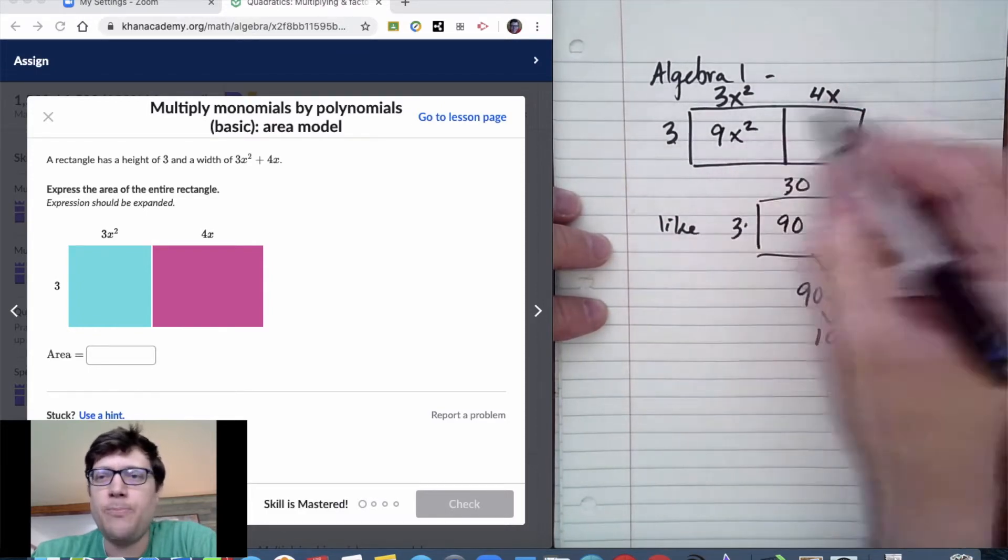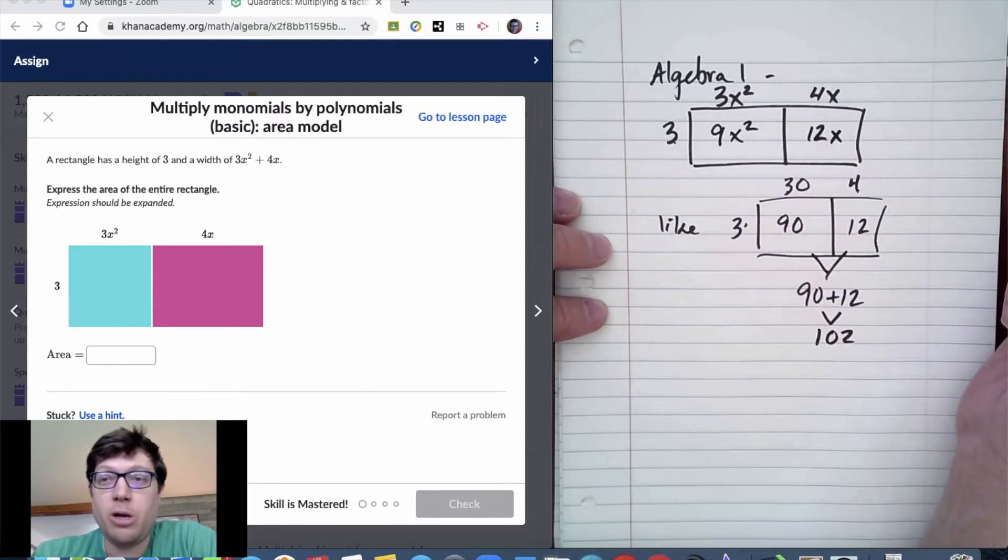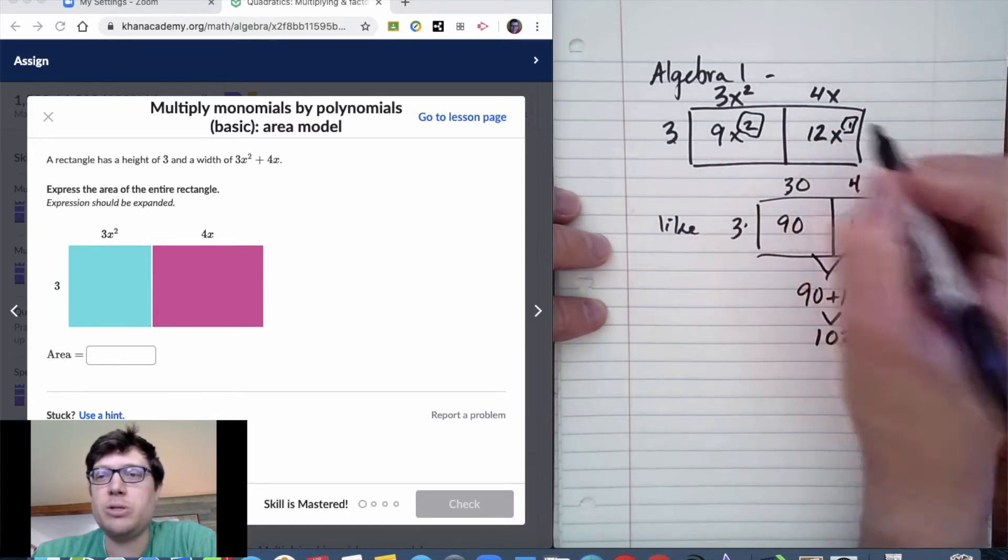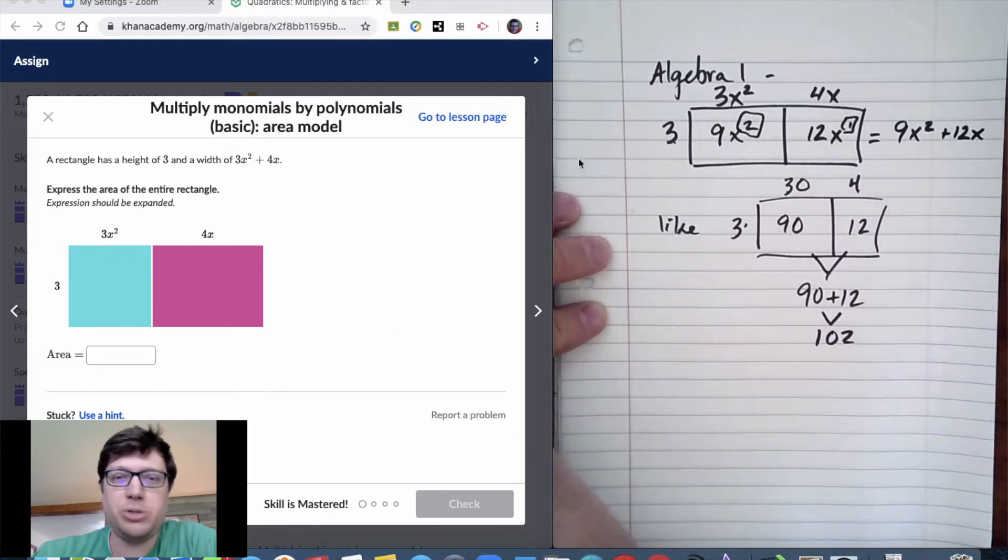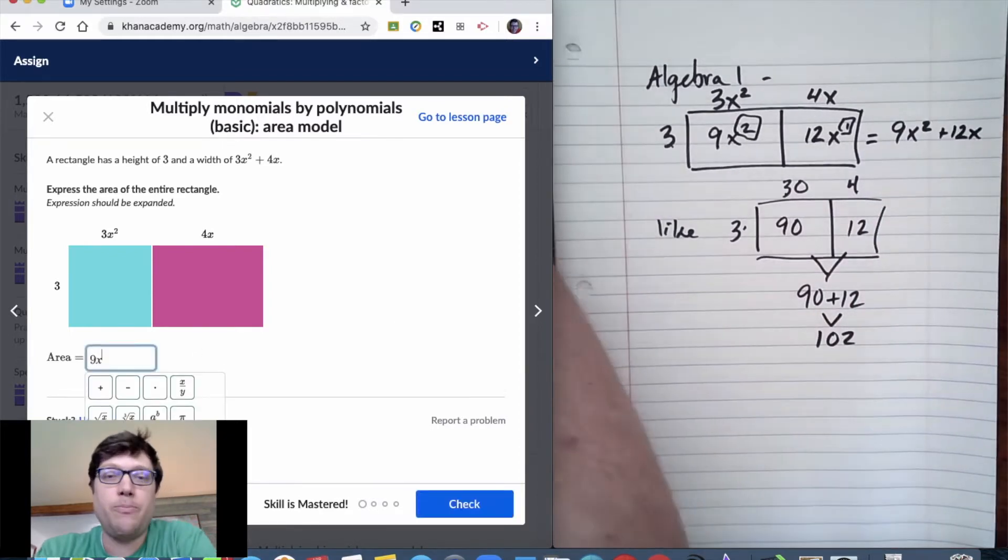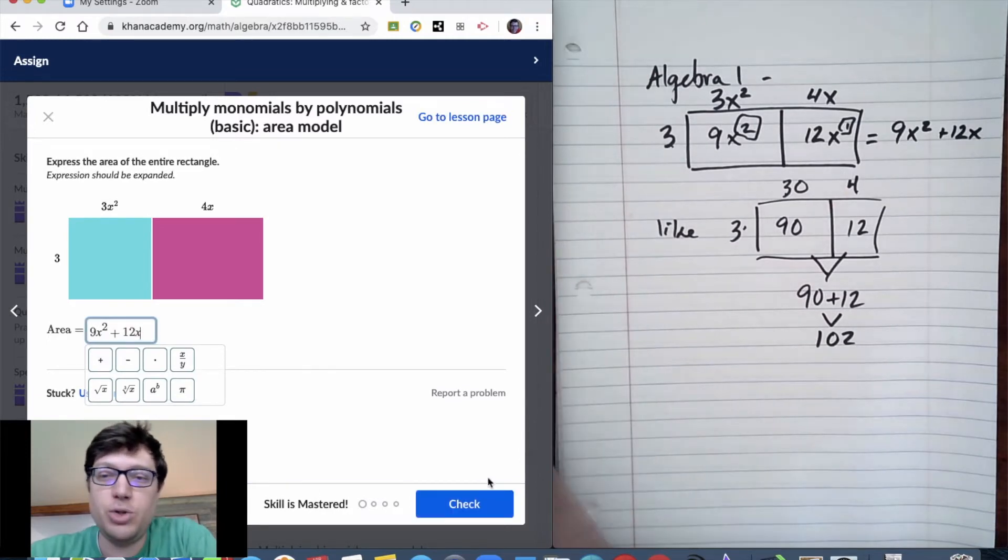We do the same thing with this one. 3 times 3, we multiply the numbers, makes 9. 3 times 4 makes 12, and you just bring in the variables x² and x. So the answer to the problem is 9x² + 12x. Check it, and got it.